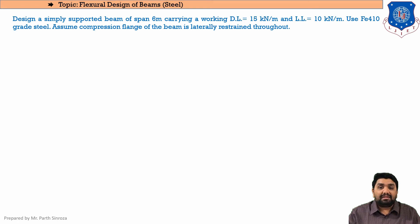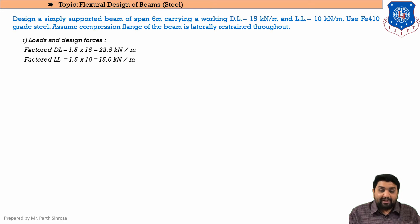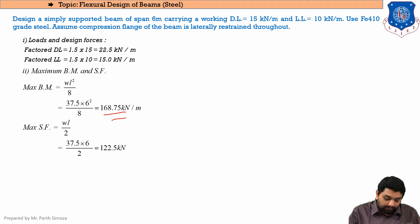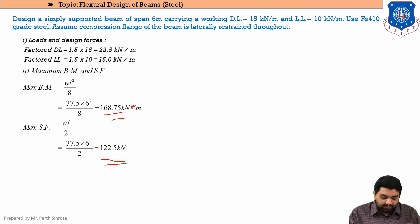The first parameters are the same as the last session. We find the factored loads: factored dead load = 22.5 kN/m and factored live load = 15 kN/m, giving a total factored UDL of 37.5 kN/m. The bending moment for a simply supported beam under UDL is WL²/8 = 168.75 kN·m, and the maximum shear force is WL/2 = 122.5 kN.